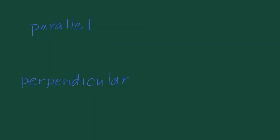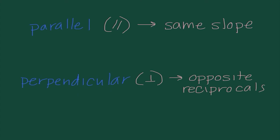The final topic is parallel and perpendicular lines. Parallel lines have the same slope. Perpendicular lines have slopes that are opposite reciprocals. For example, the opposite reciprocal of one half is negative two — it becomes negative and the fraction flips. The opposite reciprocal of negative two thirds would be positive three halves — it becomes positive and the fraction flips.